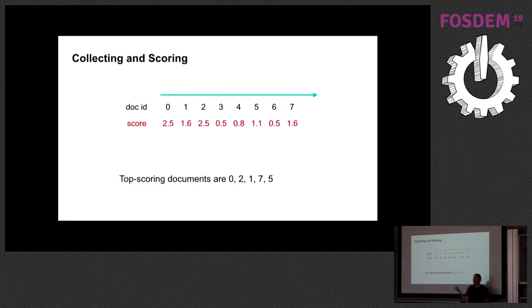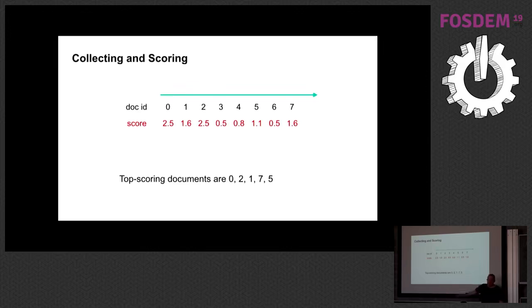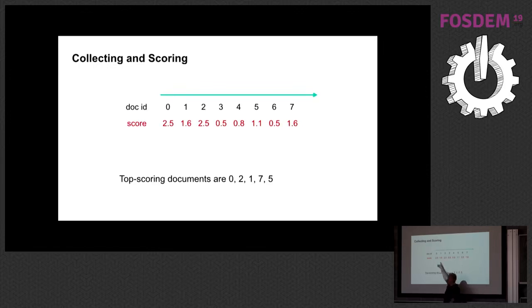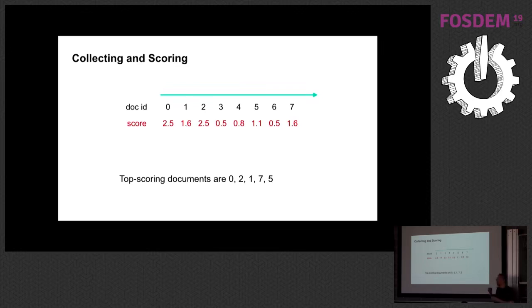Now, if we were only going to collect the top three documents, you'll notice that we actually fill the priority queue immediately. And then everything else we're going through, we're scoring, and it's just a waste of CPU cycles. None of this information is going to get into our top end. And particularly because even this one at the end, 1.6, which has the same score as this one here, but because it has a higher document ID, and our secondary sorting mechanism is always lower document ID wins, we're still going to ignore that one.